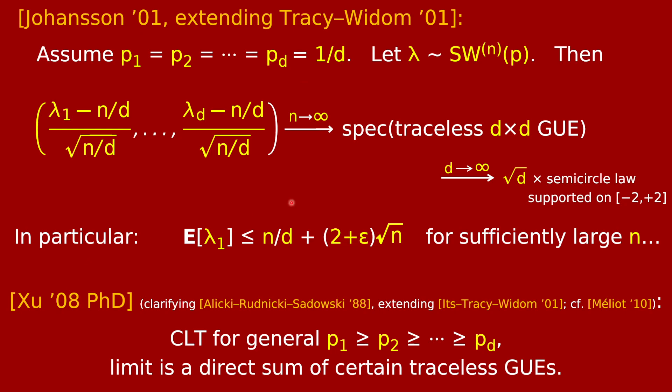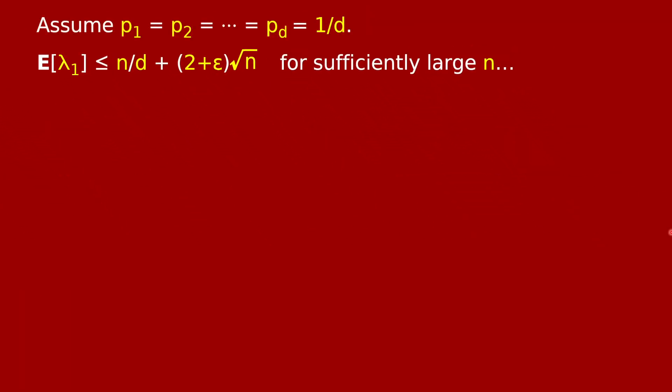So this is the case when all the p's are the same. In general, you can get a nice understanding of this limiting distribution for any situation when some of the p's are the same, some are different. If you look at Shu's PhD thesis from 2008, sort of clarifying the Alicki-Rudnicki-Sadowski result, he gave the exact central limit theorem for a general list of probabilities p1 through pd, and it's a direct sum of certain different traceless GUEs. It's not too hard to write down, but I haven't put it up here on the screen because it wouldn't be particularly enlightening.